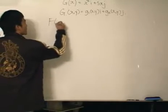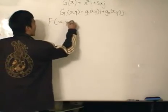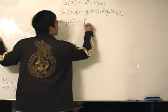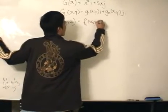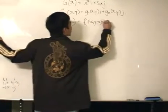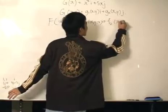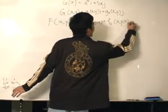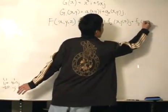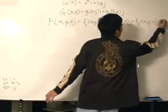Vector function f, now, x, y, and z, and it equals a function f1 of x, y, and z, i, function f2 of x, y, and z, j, and function f3 of x, y, and z, k.